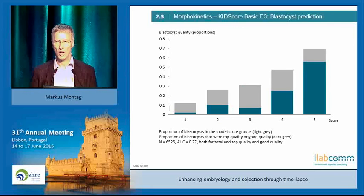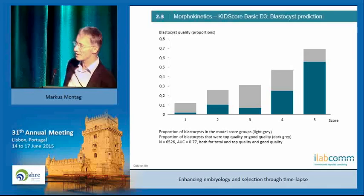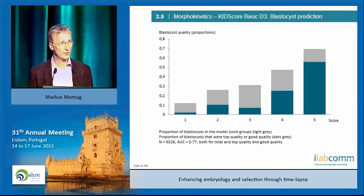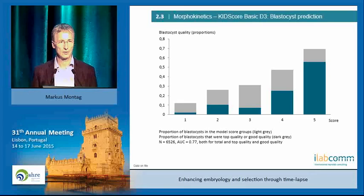KIDScore also works as a day-five predictor, even though it is a day-three algorithm. Looking at KIDScore categories against blastocyst formation rate and blastocyst quality, there is a huge difference between KIDScore category one and five in how many blastocysts develop and how many are top quality — amazing to know that on day three.